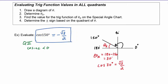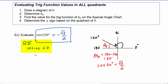We combined the fact that the cosine of our reference angle, 30 degrees, had a value of radical three over two, with the fact that in quadrant two cosine is negative. That's how we knew that cosine of 150 degrees is negative radical three over two.